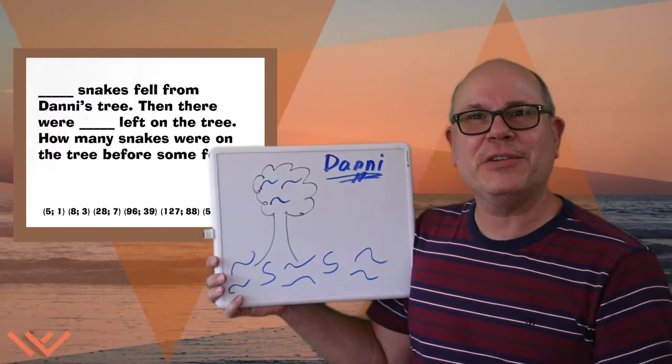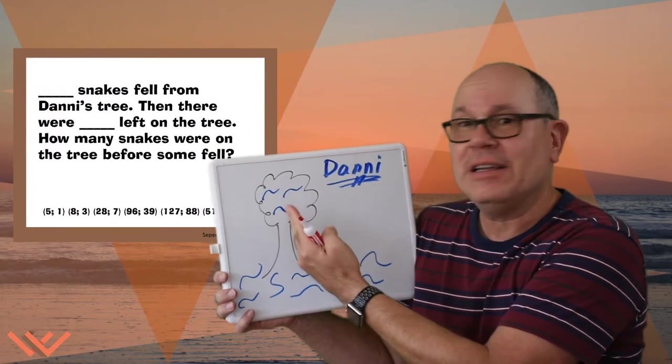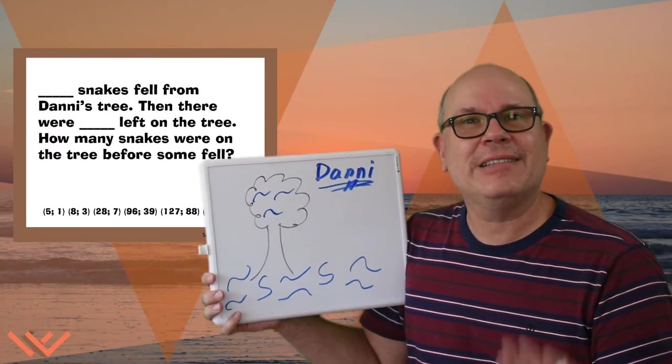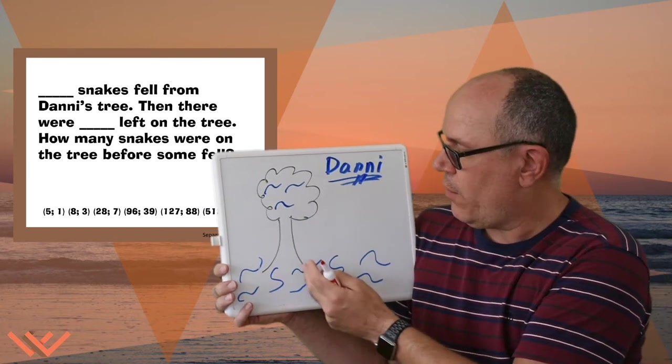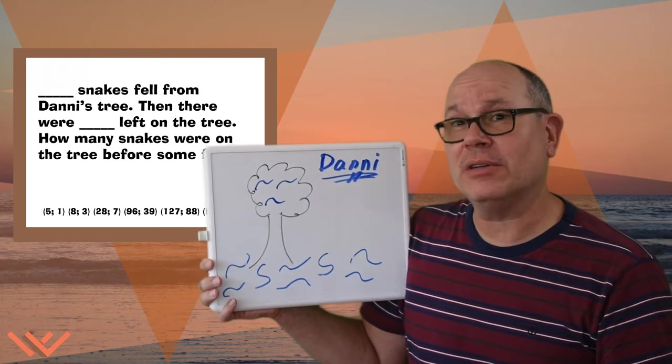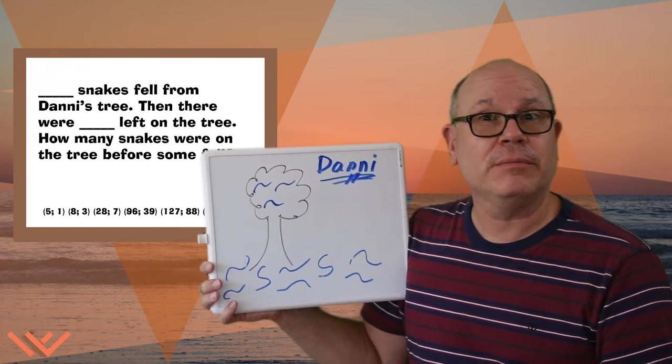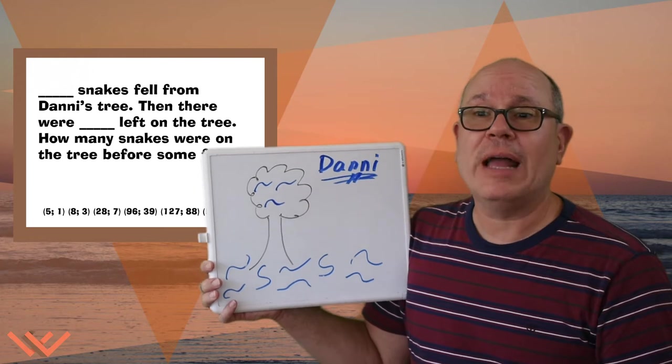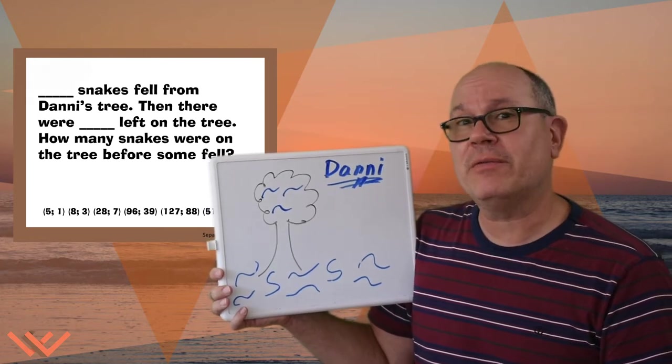Okay friends, here's my tree with snakes in it. Let's look at the problem. So eight snakes fell. One, two, three, four, five, six, seven, eight. So we have eight snakes on the ground. How many were left on the tree? Three! So how many snakes were on the tree before some of them fell?